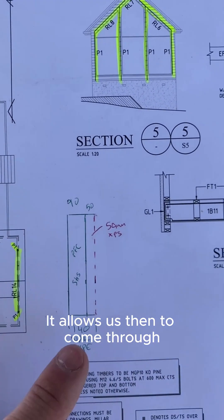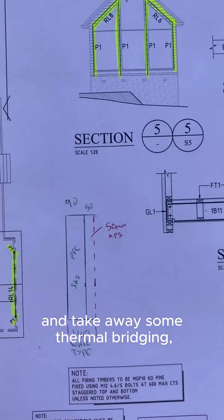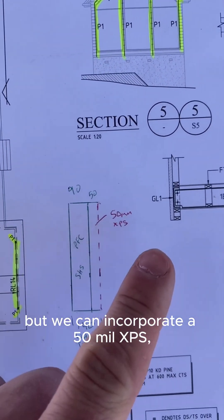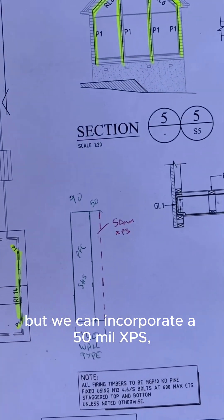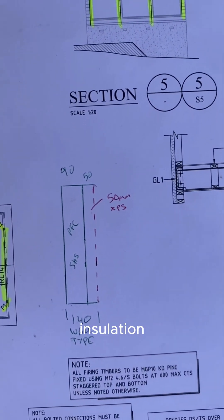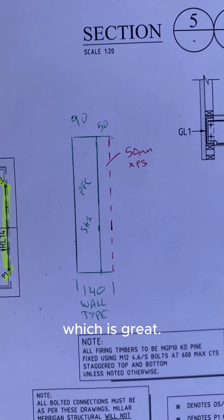It allows us then to come through and take away some thermal bridging. Might not always be perfect, but we can incorporate a 50mm XPS insulation onto this, which is also vapour closed as well, which is great.